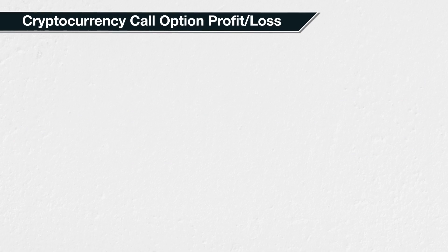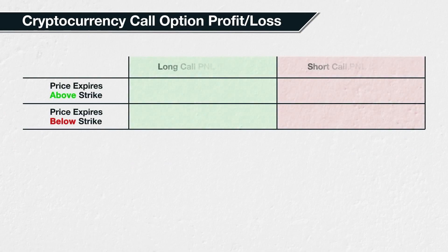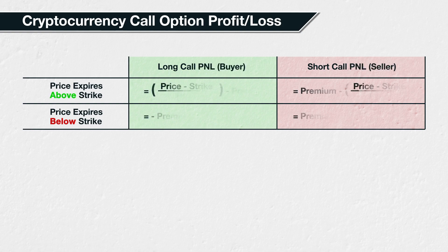In this lecture, we will cover the maximum profit or loss of a Bitcoin call option measured in Bitcoin for both the buyer and the seller. It's particularly important to be aware of how this differs to the calculations given in lecture 3.7.